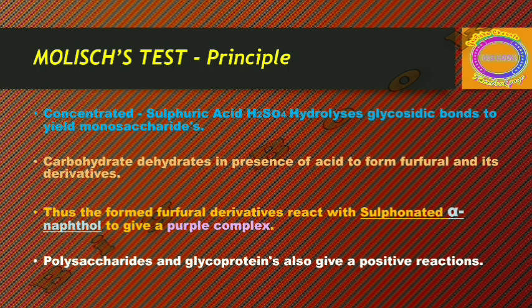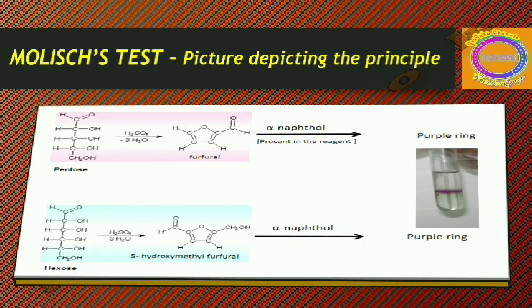Polysaccharides and glycoproteins also give a positive reaction. Polysaccharides will also produce the purple complex because of the reaction of sulfuric acid with them, followed by the addition of alpha-naphthol to the sample. This completes the principle of the test.